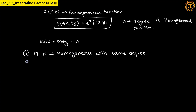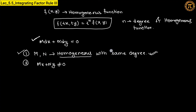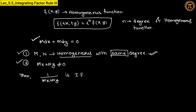The second condition is that Mx plus Ny must be non-zero. So to summarize: given M dx plus N dy equals 0, first M and N must both be homogeneous functions with the same degree, and second Mx plus Ny must not equal zero. If both conditions hold, then the integrating factor is 1 divided by Mx plus Ny.